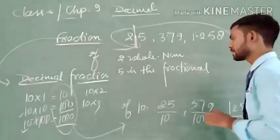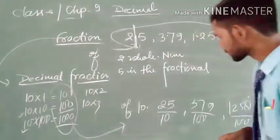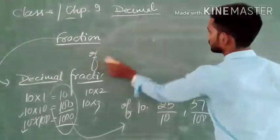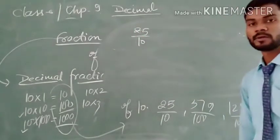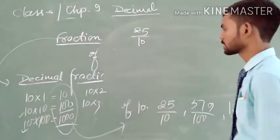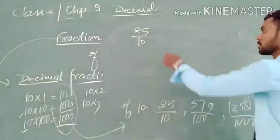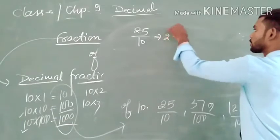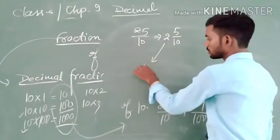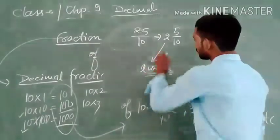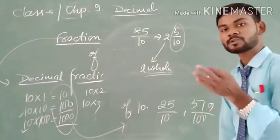Let me explain. If we write 25 upon 10, then here we can see that this is an improper fraction. Whenever it is an improper fraction, it can be converted into a mixed fraction. When it becomes a mixed fraction, we get 2 whole 5 upon 10. So if I say 'two whole', which means two is the whole number, and 5 upon 10 is the fractional part — also called the decimal fractional part or decimal part.